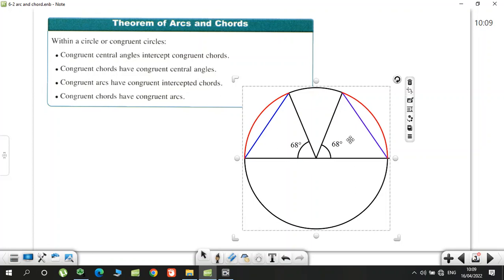What does it say? Congruent central angles. Let's say 68, 68. If the angles are congruent, so the chords are congruent. The congruent chords, so they have the same idea. They will have congruent central angles. Like arcs are same, central angles same. Chords are same, central angles are same. Arcs are congruent, chords are congruent. That's all.